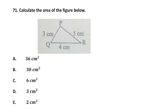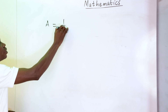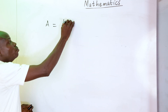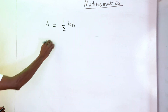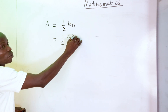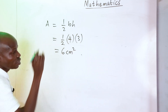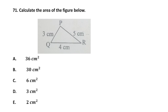Number 71: the dimensions given form a Pythagorean triple, so the triangle is automatically right-angled. The area is simply half times base times height, giving half times 4 times 3, which equals 6 square centimeters. That matches option C.